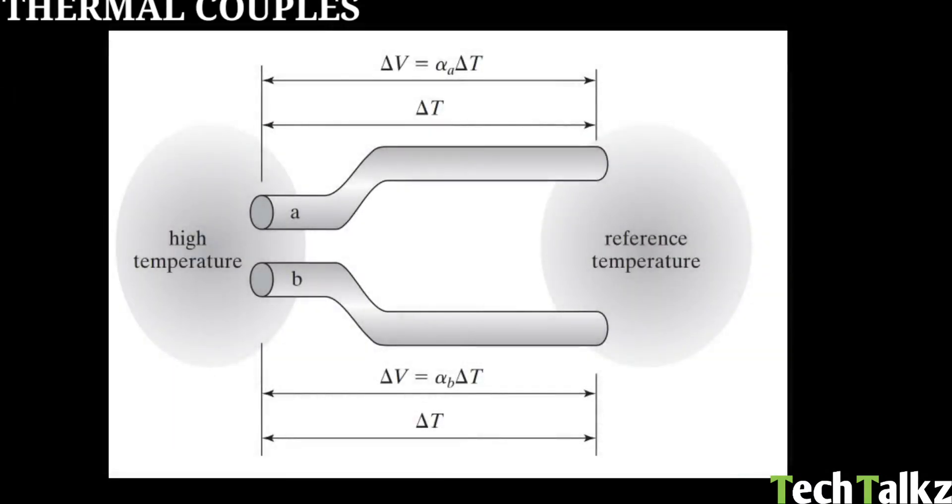If you check the thermal couple element, two different metals are selected, materials A and B with different Seebeck coefficients. The top arm has Seebeck coefficient alpha A, and delta V is alpha A delta T. The lower arm delta V is alpha B delta T.